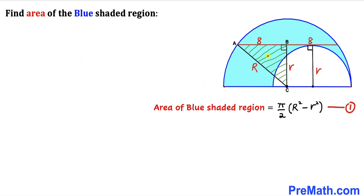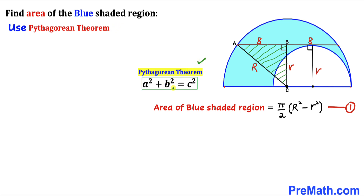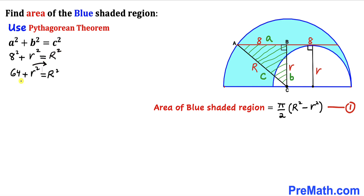Now let's focus on triangle ABC. We know this is a right triangle, so we will use the Pythagorean theorem: a squared plus b squared equals c squared. In our case, the longest side is c, which is uppercase R. Side a is 8 and side b is lowercase r. Substituting: 8 squared plus r squared equals R squared.